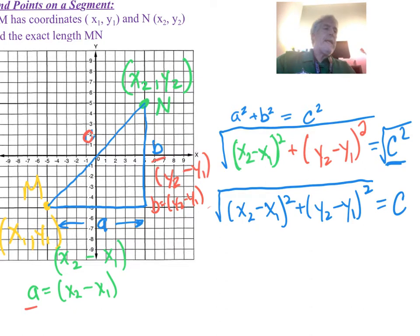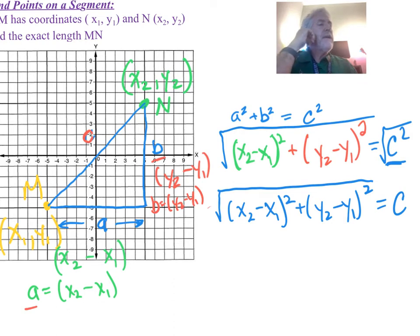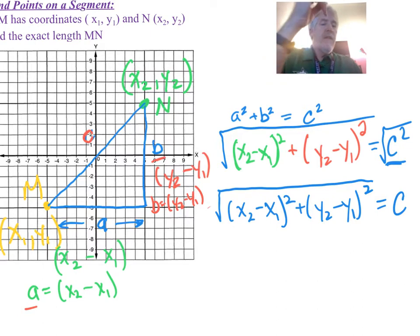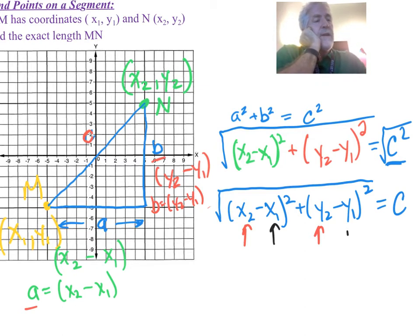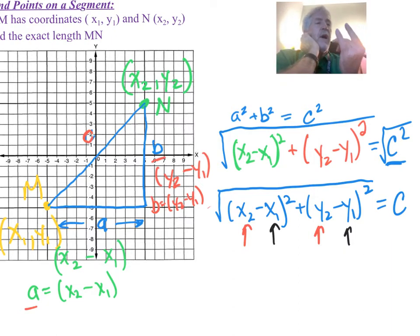This works for any two points in our Cartesian coordinate system. You plug in the points, making sure that x2 and y2 correspond to one point and x1 and y1 to the other. The only way you'll get this wrong is if you mix up the x and y values. As long as you pair them together, this will work every time.